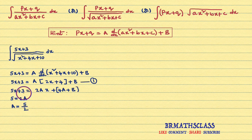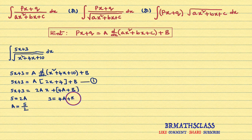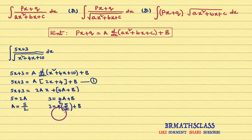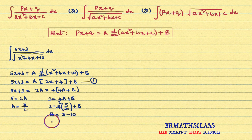Now compare the constants. If we compare the constants, we get 3 equal to 4A plus B. I will substitute the A value to get B. So, 3 equals 4 into 5 by 2 plus B, which gives 3 equals 10 plus B. Taking 10 to the other side, B equals 3 minus 10, so B equals minus 7. We have now got the values of A and B.